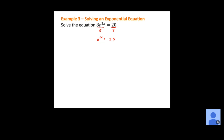Since the base is e, I'll use a natural log. Take the natural log of e to the 2x equals the natural log of 2.5. One of our properties says the natural log of e to some power equals that exponent, because the base of the natural log is e — so the natural log of e cancels, giving us what's in the exponent. Now we have 2x equals the natural log of 2.5. Divide by 2, and we get x equals natural log of 2.5 all over 2, which is the exact value.